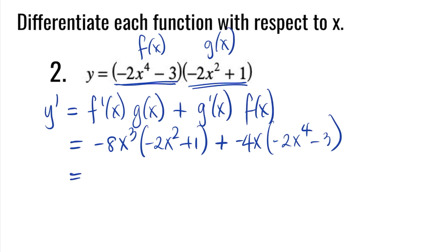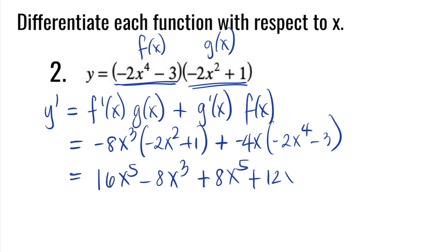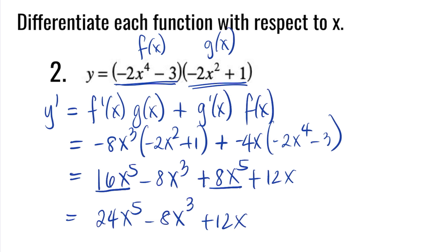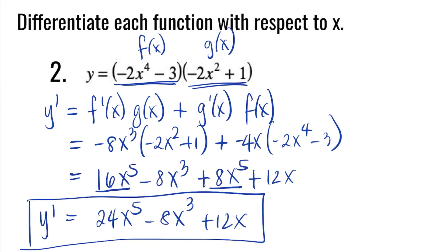Distributing negative 8x cubed, we get 16x to the fifth minus 8x cubed. Distributing negative 4x, we get plus 8x to the fifth plus 12x. Combining like terms: 16x to the fifth and 8x to the fifth give 24x to the fifth. So the answer for number 2 is y prime equals 24x to the fifth minus 8x cubed plus 12x.